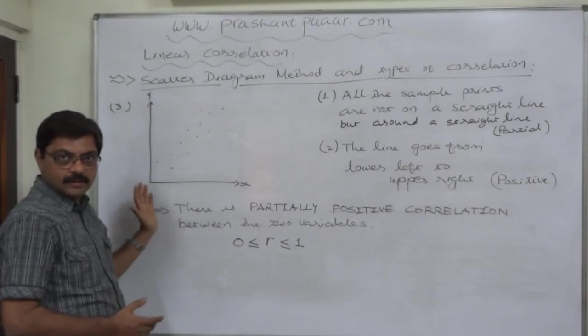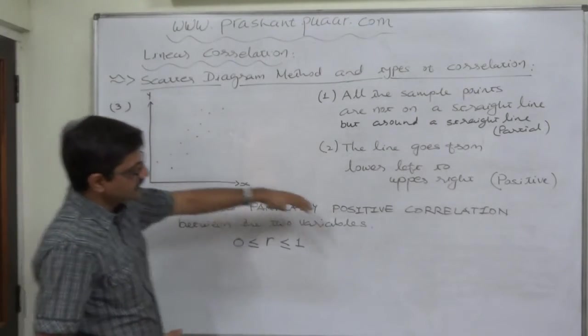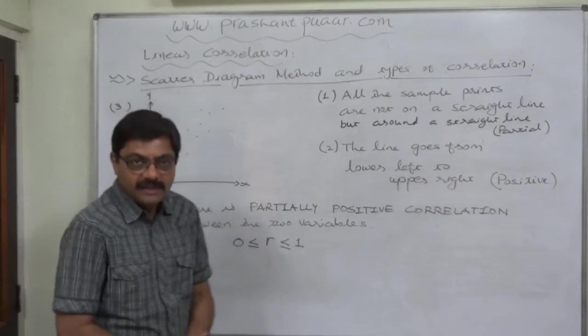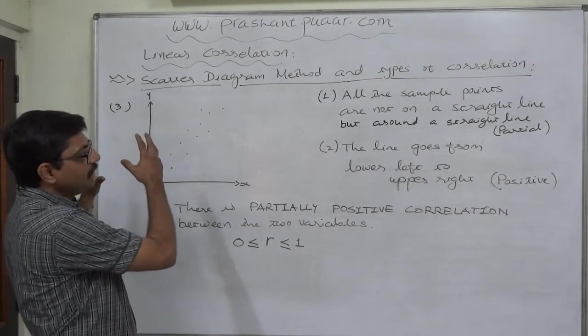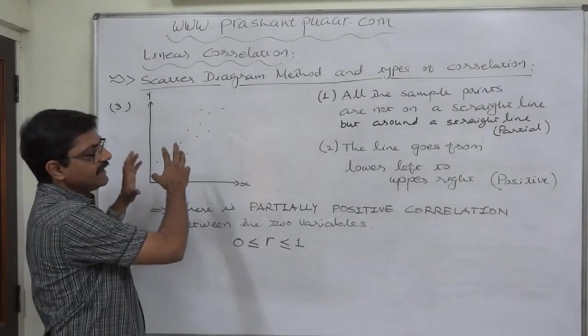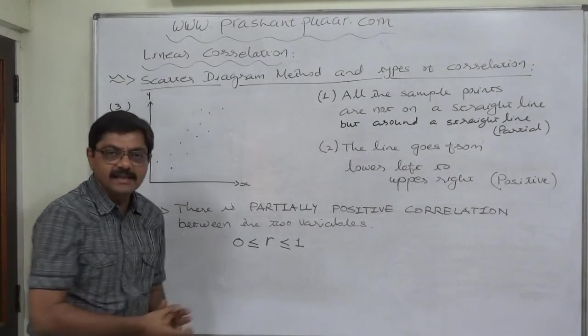So ultimately, we can conclude that when we get all the sample points not on a straight line but around a straight line, and the line goes from lower left to upper right, there is a partially positive correlation between the two variables.